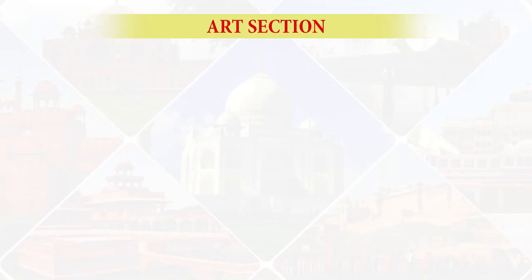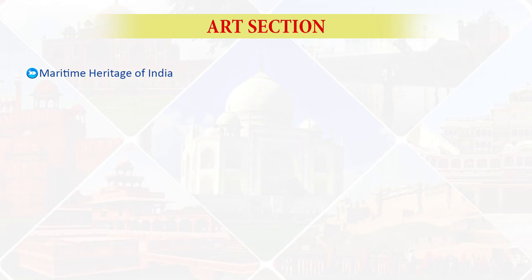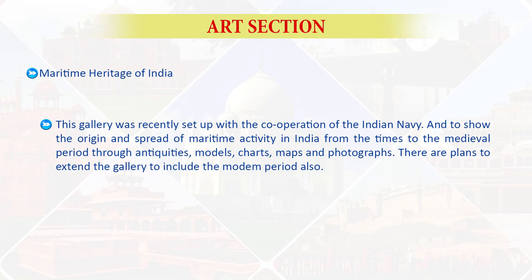Next is Indian textile. The museum has selected examples of 18th-century Kashmir shawls, patkas, and kamar bands. The collection of 18th-century brocades includes sarees of Banaras, Surat, and Aurangabad origin. The patola silk is an interesting specimen of the tie-dye variety from India. It also has a good number of sarees and turbans printed by a wax printing process of Tanjore. For Far Eastern art, the Chinese and Japanese collection from the house of Tata includes porcelain, ivory objects, jade, semi-precious stones, crystal objects, snuff bottles, embroidery work, and examples of lacquer work.